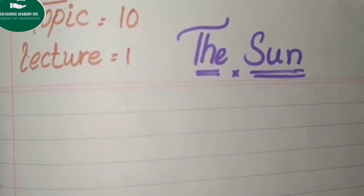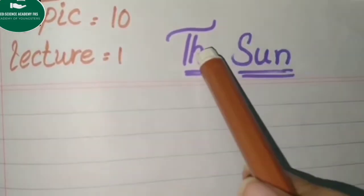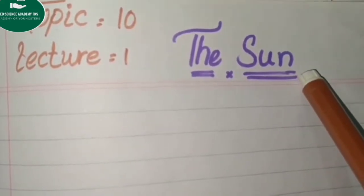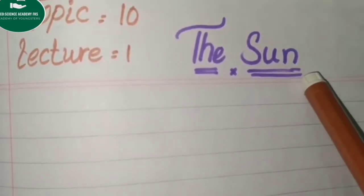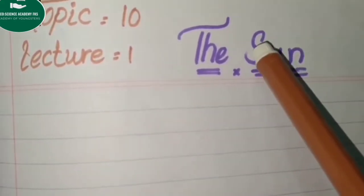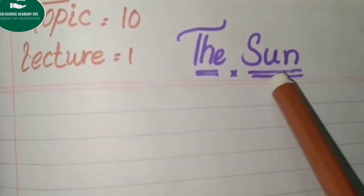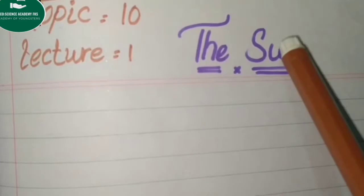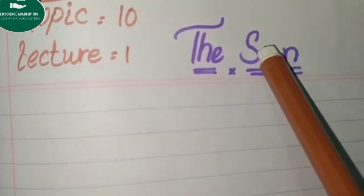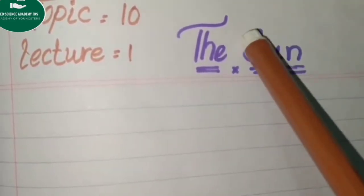Topic number 10 is the last lecture and topic of class 3. The topic is the Sun. What is the Sun? As we already know, the sun is a star. Sun is a big ball of gases and it's the center of the solar system because it's in the center and the other planets surround it and move around it.